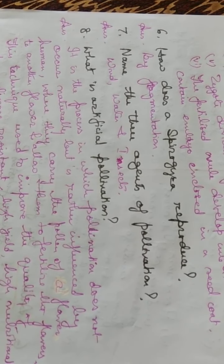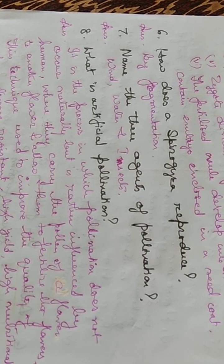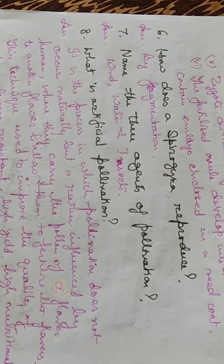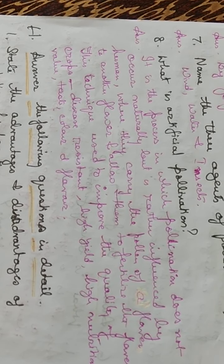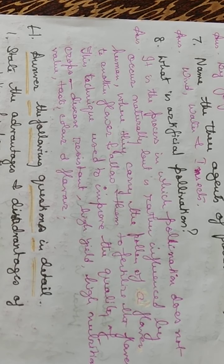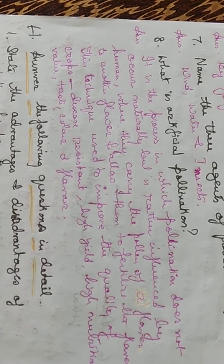How does Spirogyra reproduce? It reproduces by fragmentation. Name three agents of pollination: wind, water, and insects. What is artificial pollination? It is a process in which pollination does not occur naturally but is done by humans, who carry the pollen of one flower to another to allow fertilization. This technique is used to improve crop quality such as disease resistance, high yield, high nutritional value, taste, color, and flavor.